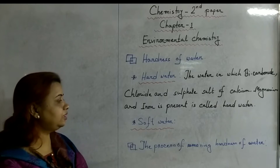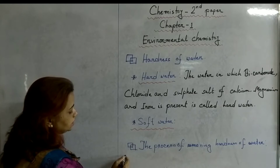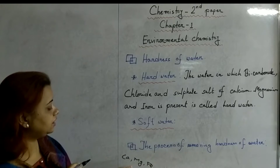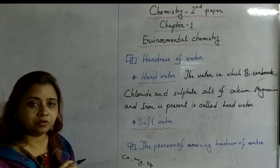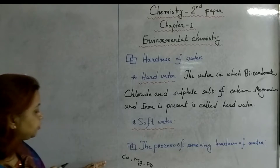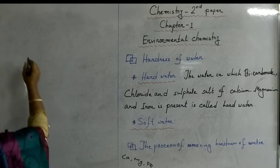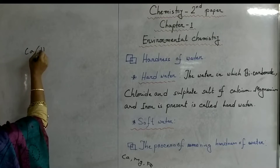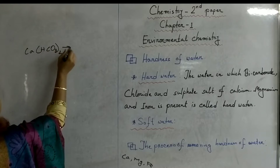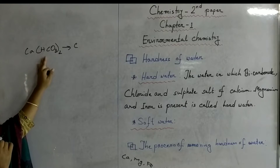What is temporary hardness? Whenever bicarbonate salts of calcium, magnesium, and iron are present in water, that is known as temporary hardness of water. Temporary hardness can be removed only by boiling the water.